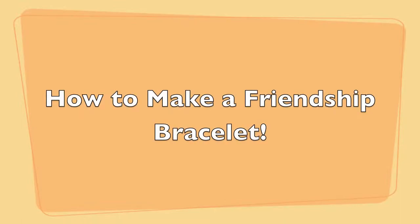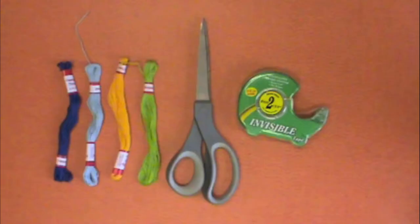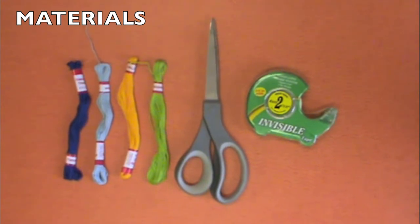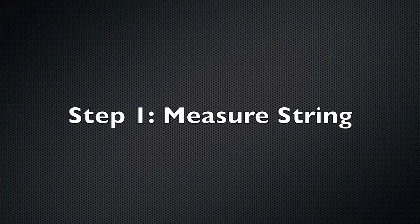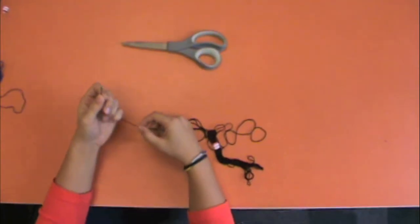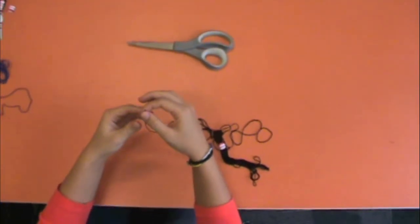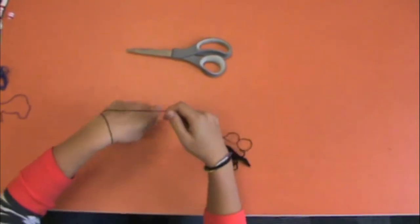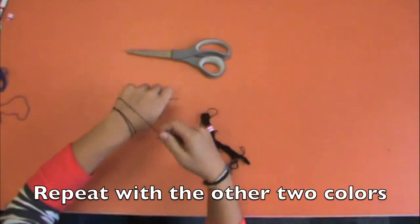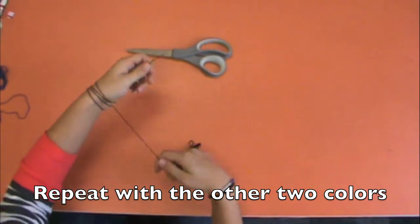I'm going to measure out your string. In order to do this, you're going to take the string and wrap it around your wrist four times. One, two, three, four.